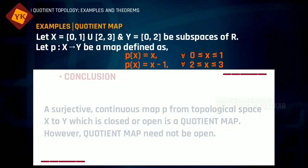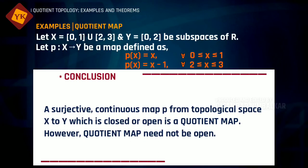So from this we can conclude that a map p from X to Y which is continuous, surjective, and closed is a quotient map. However, the quotient map need not be an open map.